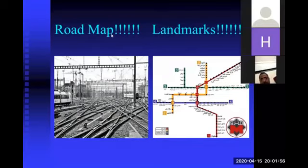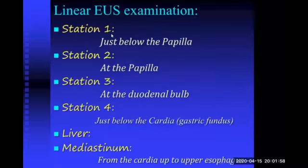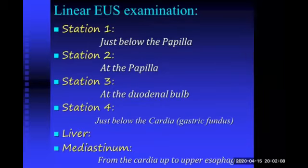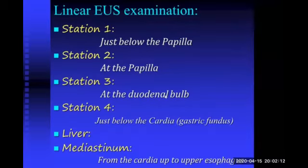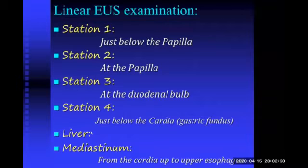There are four stations for endoscopic ultrasound abdominal examination. Station one is just below the papilla. Station two is at the papilla. Station three is at the duodenal bulb. Station four is just below the cardia and includes the whole stomach. We should also examine the liver and the mediastinum.